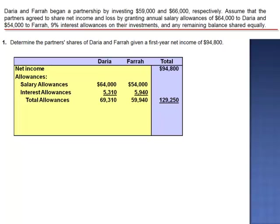Now, even though the allowances exceed net income, it doesn't mean that the partnership was unprofitable. Net income means that there was an inflow of assets, just not a sufficient amount to fully compensate our partners for their investments of time and assets. The balance of income is a negative $34,450.